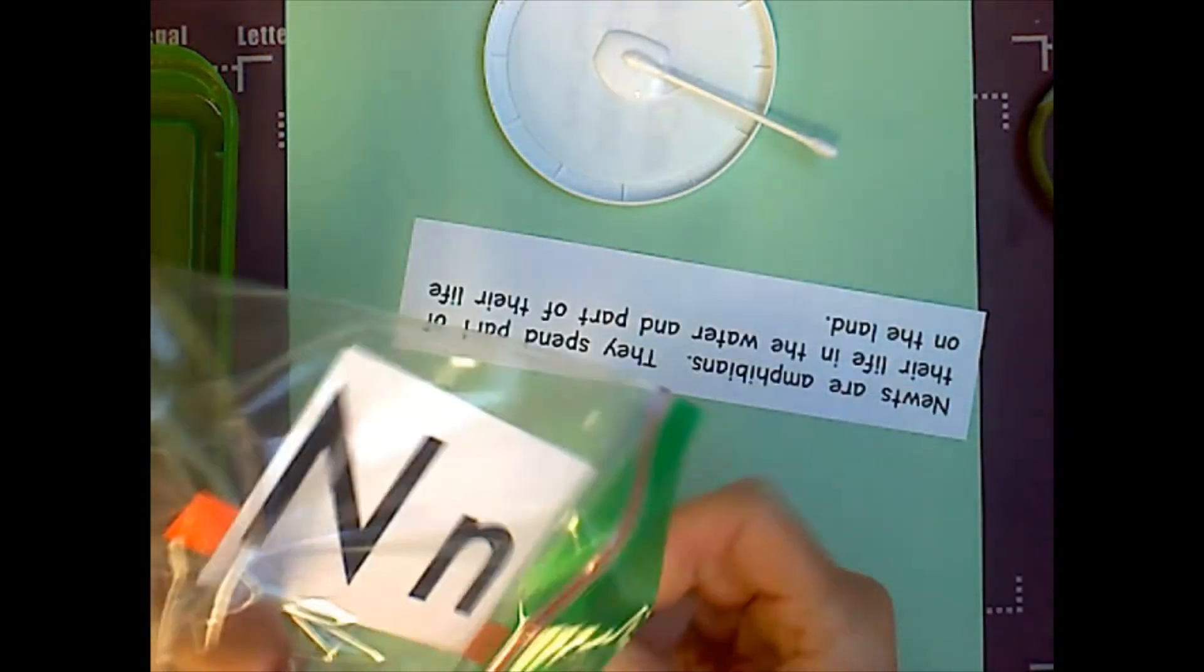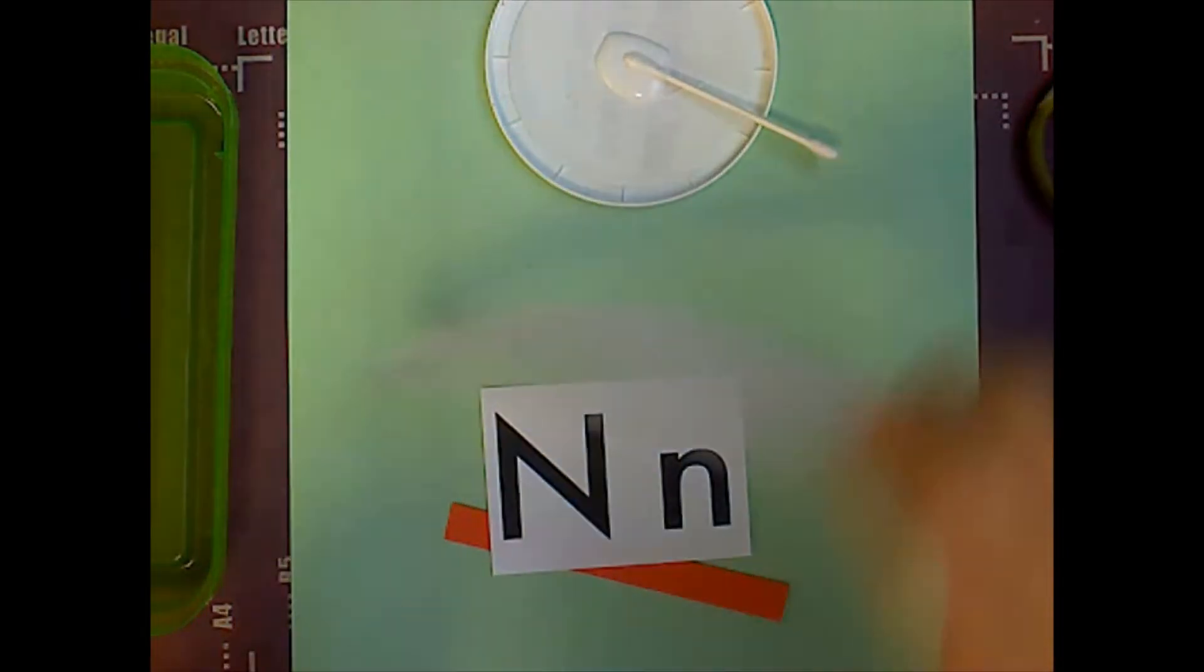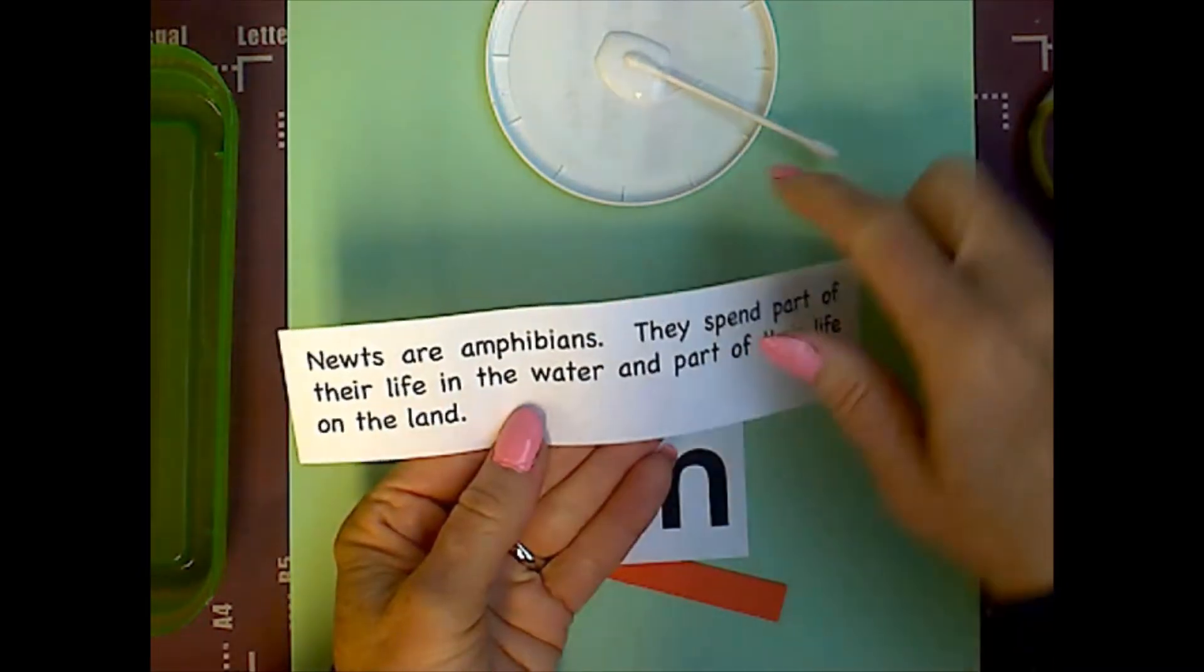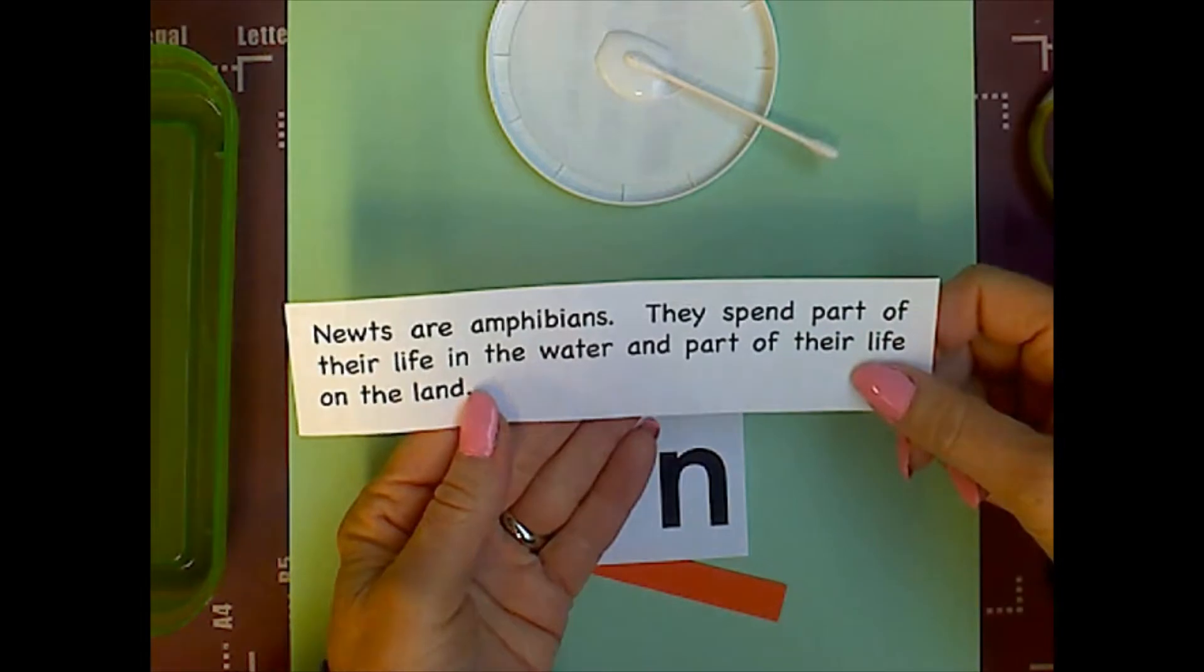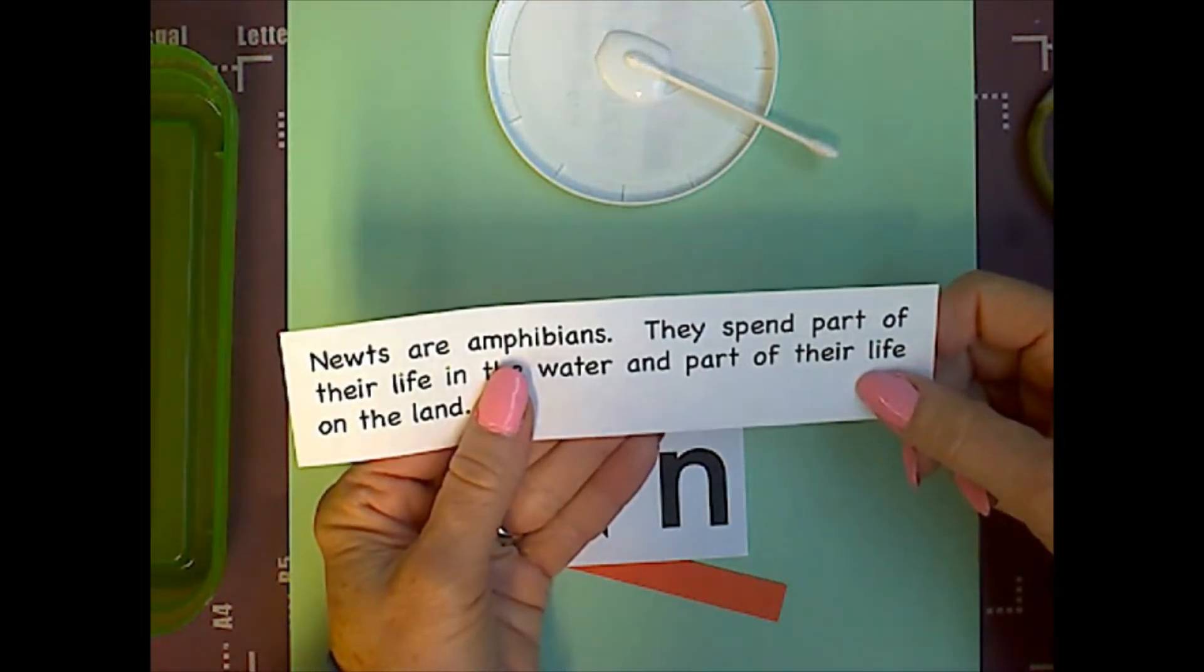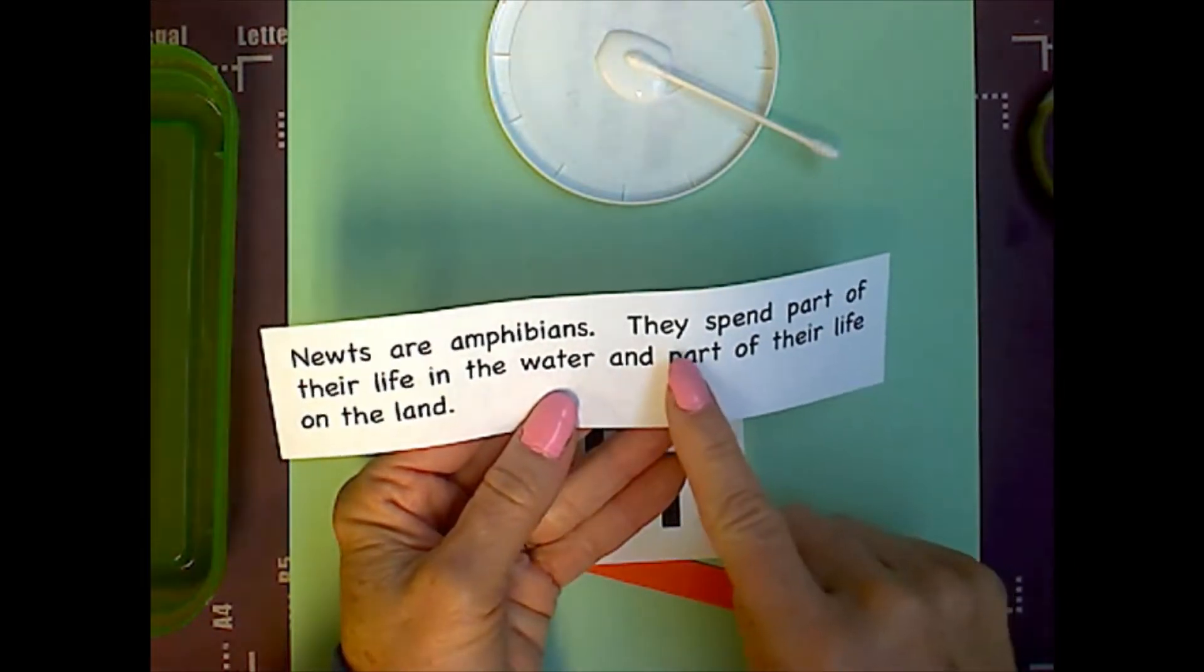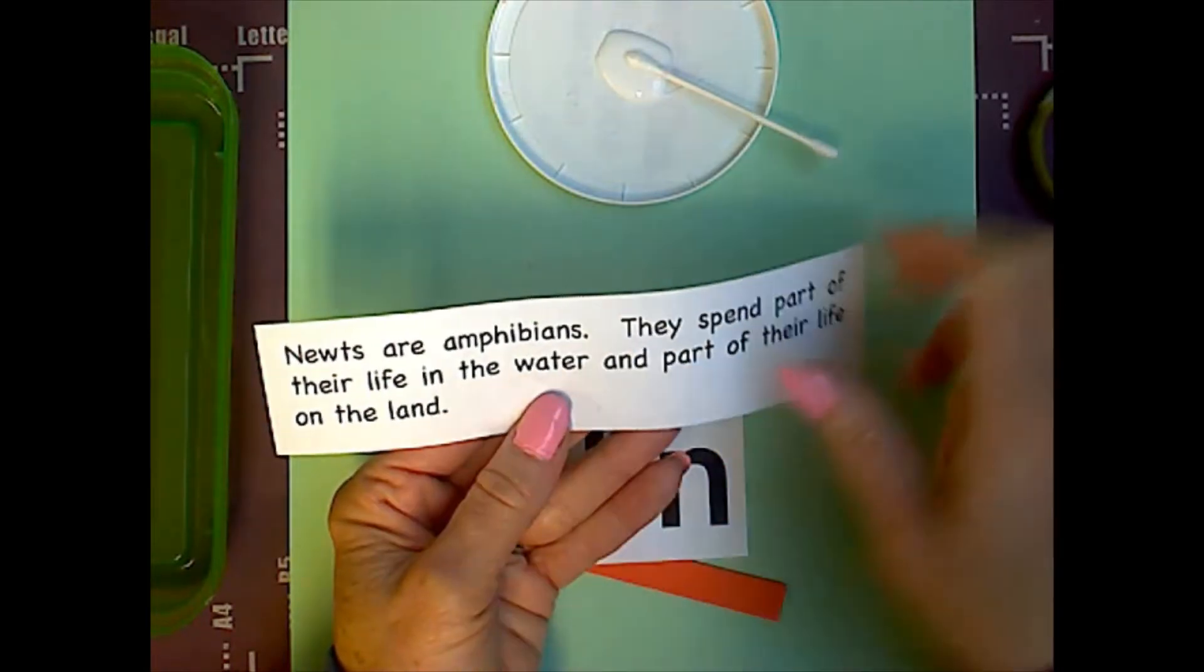Let's see, I'm going to need to get my pieces out. The first thing you can do is glue your fun fact at the bottom. It says newts are amphibians, which means they live partially in the water and partially out of the water. They're also, like a frog, they start out their life as a tadpole. And this says they spend part of their life in the water and part of their life on the land.